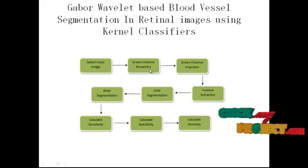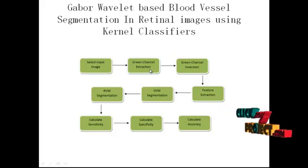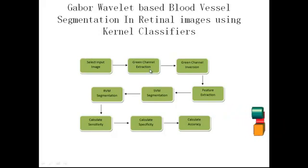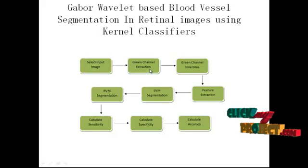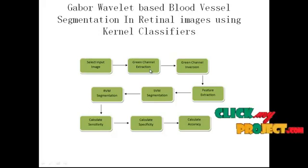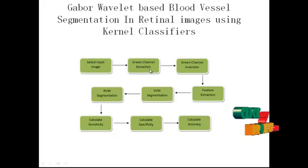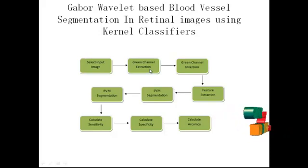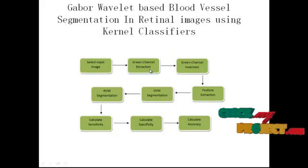Green channel extraction means extracting the red, green, and blue components from the input image. The green channel is selected because it shows the best vessel-to-background contrast. Red and blue channels show low contrast and are very noisy compared to the green channel, hence we extract the green channel.